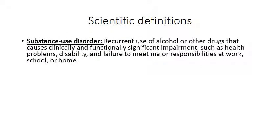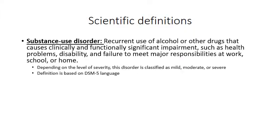The scientific definitions. Currently, substance use disorder is defined as a recurrent use of any substance, including alcohol or other drugs, that causes clinical and functional impairment. This could also manifest as health problems, disability, and not being able to meet major responsibilities at work, home, or school. It can be stratified based on level of severity as mild, moderate, and severe — based on the new DSM-5 language.